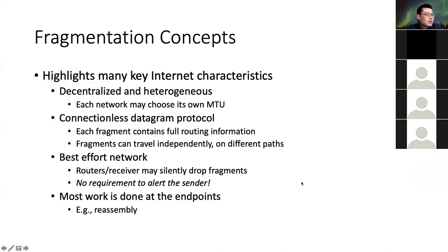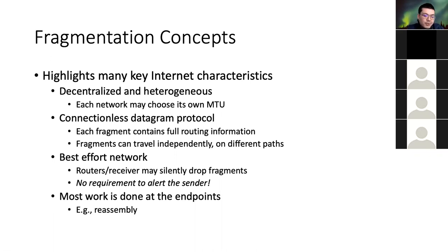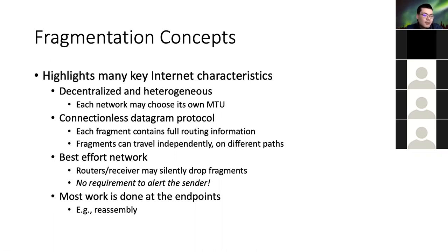In IPv6, fragmentation is totally avoided. The simple idea is to probe the routing path and ask for the smallest MTU. By sending probe packets first, when you actually send data, you ensure your datagram size never exceeds the minimum MTU along the path. This avoids any fragmentation cost entirely.